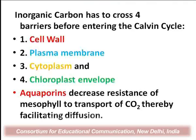By entering the Calvin cycle, we mean before it comes into contact with RuBP and the Rubisco enzyme. The four barriers are: first the cell wall, then the periplasmic space, then the plasma membrane itself — which is selectively permeable with many pumps, gates, and channels — then through the cytosol, and finally through the chloroplast envelope, since the Benson-Calvin cycle takes place in the stroma. In this context, aquaporins are very important for transportation of carbon dioxide.